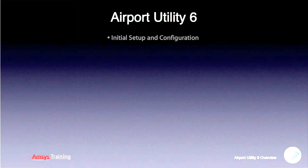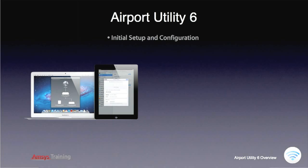To kick off, let's look at what you need to get started. Firstly, make sure your computer or iOS device has Wi-Fi connectability and that Wi-Fi is turned on, so you can access your new wireless network. Airport Utility for Mac or iOS should be installed on your device. Browse the App Store for Airport Utility if you don't already have it. Airport Utility for Mac requires Mac OS X Lion 10.7.2 or later.